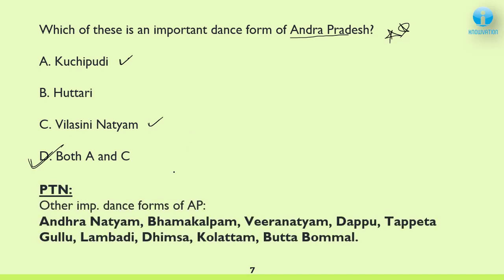Other important dance forms of Andhra Pradesh you should know: Andhra Natyam, Bhama Kalapam, Veer Natyam, Dappu, Tapeta, Gullu, Lambadi, Dhimsa, Kolaktam, and Bhutta Bumal. These are arranged in decreasing order of importance — the most important is Andhra Natyam. Try to remember all of them, but at minimum remember the higher-importance ones.